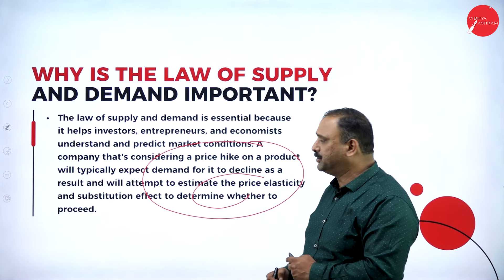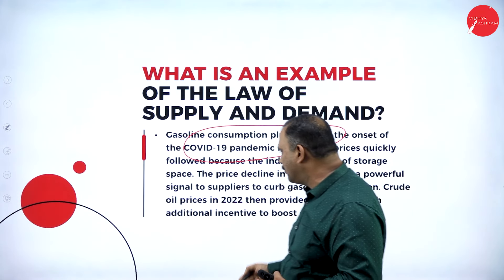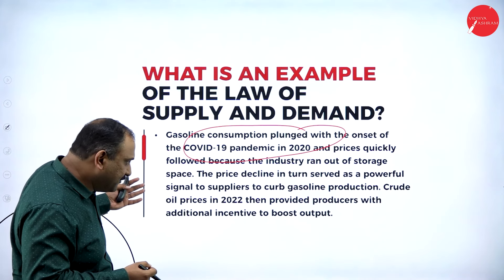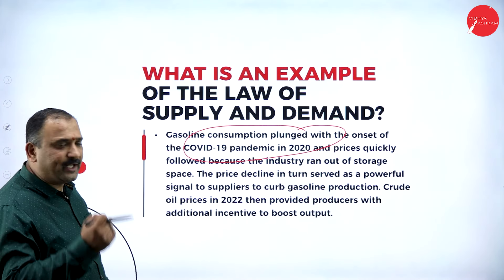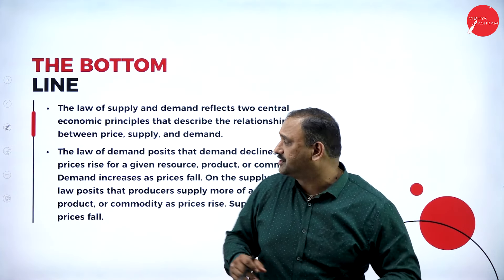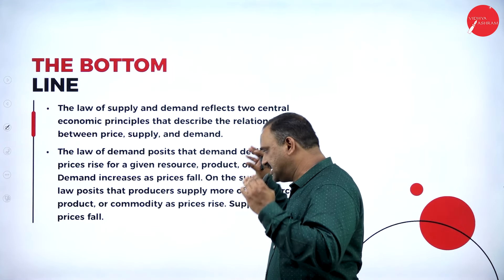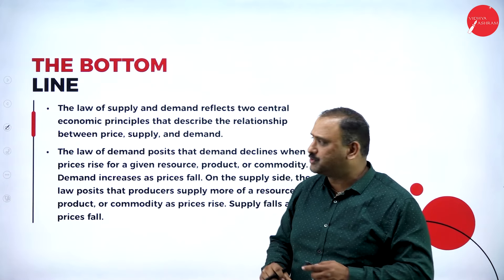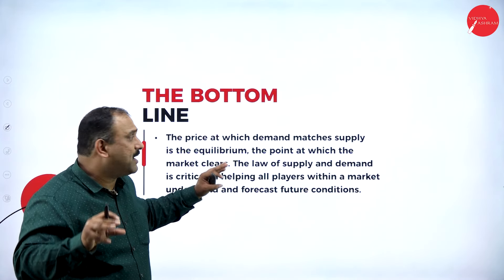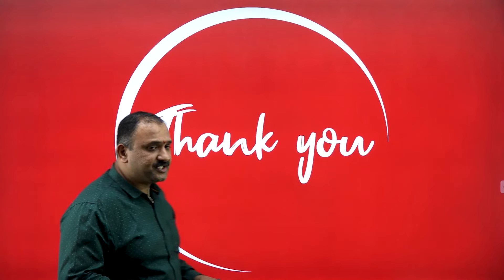An example is the prices of gasoline that plunged during the COVID-19 pandemic in 2020. The price decline served as a major supply factor, and once prices started going up again, suppliers made very good money in the gas and petroleum business. The bottom line is that without the law of supply and demand, economics is never complete. The law of supply and demand plays a central role in deciding a product's price, a commodity's resource, and its usefulness. All players within the market will always consider this factor, and future market conditions are purely dependent on the supply-demand function.